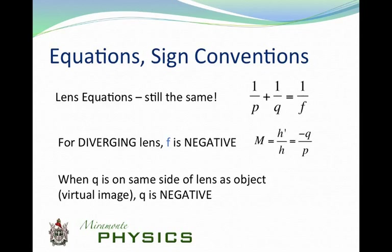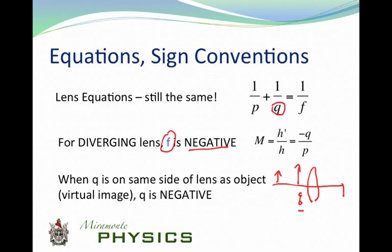We use the same lens equations as we used for mirrors when calculating lens problems, whether converging or diverging. So 1 over P is the object distance, 1 over Q is the image distance, and 1 over F is the focal point. The key to remember is that F is negative when dealing with a diverging lens. Also, Q is negative if the image ends up on the same side of the lens as the object. If the image ends up on the opposite side, then Q is positive. That's the sign convention for lenses.